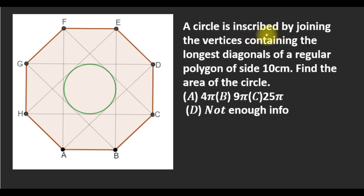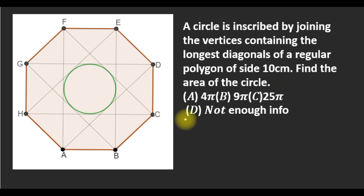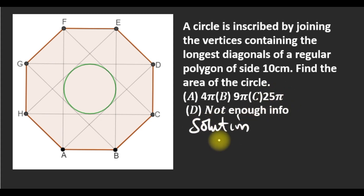A circle is inscribed by joining the vertices containing the longest diagonals of a regular polygon of side 10. Find the area of this circle. The answer is 5 squared pi, which is 25π.